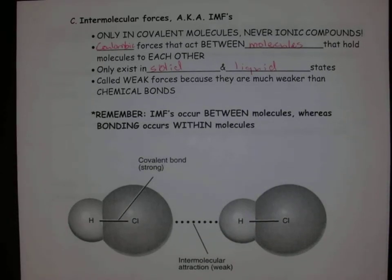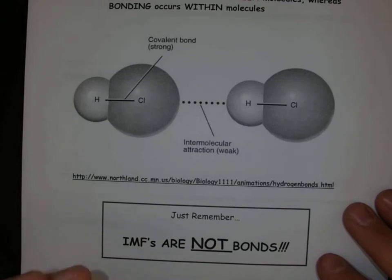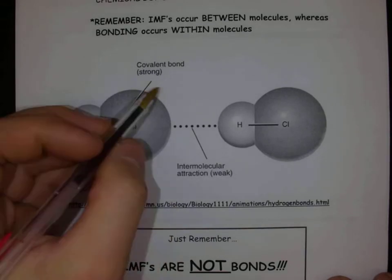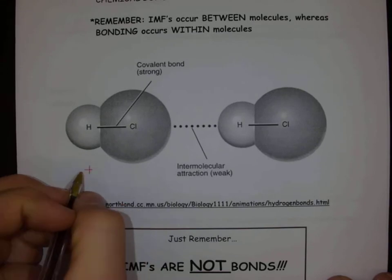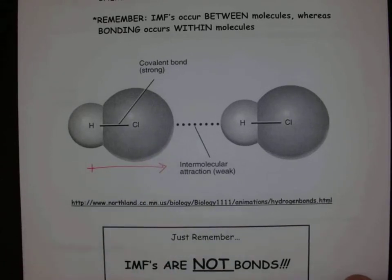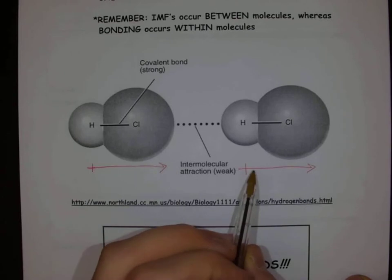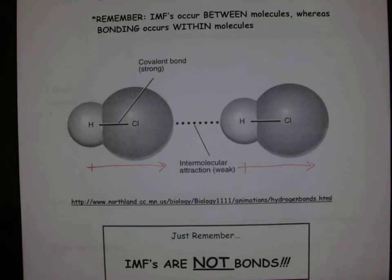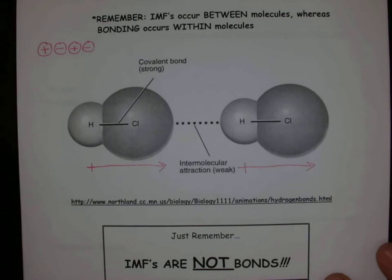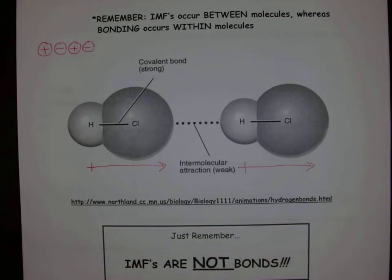Intermolecular forces are not bonds — they are interactions between particles. If we look at HCl, there is more electron density over on the chlorine, so we have a more positive end on the hydrogen side and a more negative end on the chlorine side. This negative end of one molecule can interact with the positive end of another molecule. Similar to how ionic compounds interact with full positive and full negative, our intermolecular forces kind of force our molecules to line up and hold them together.